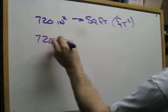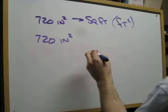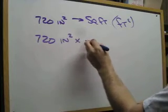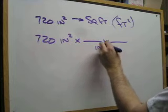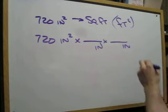So let's just go ahead and do that. 720 inches squared, because there's a 2 up there, times line, times line. And we put inches in both bottoms, the denominator positions.